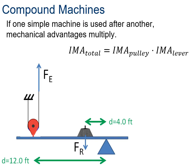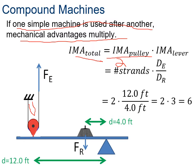If we have one simple machine working with another one, then the mechanical advantages will multiply. To calculate the total IMA, we take the IMA of the pulley—this is a movable pulley, movable pulleys have the IMA of two—times the IMA of the lever. The IMA of the lever is the effort distance, 12, divided by the resistance distance, which is 4. So 12 over 4 gives us 3. Two times 3 gives us 6, so we have a total IMA of 6.